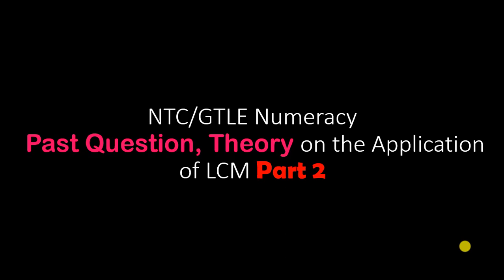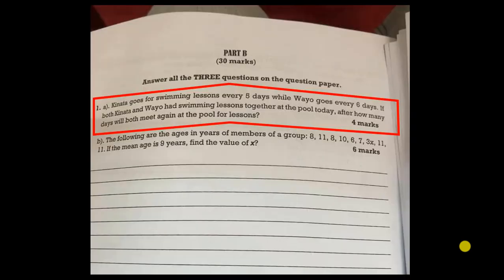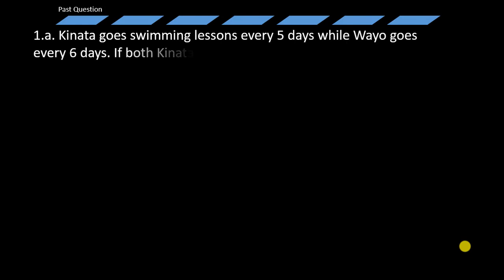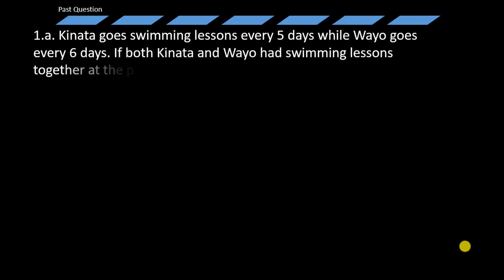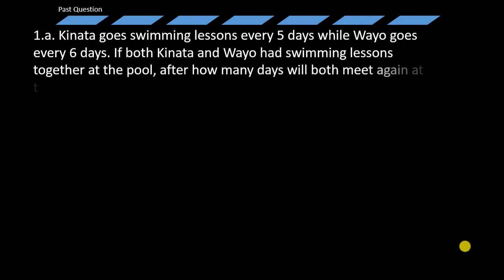Now let's proceed to the question. This is the snapshot of the question and we are tackling the first one. Let's read along: Kinata goes swimming lessons every five days while Wayu goes every six days. If both Kinata and Wayu have swimming lessons together at the pool, after how many days will both meet again at the pool for lessons?